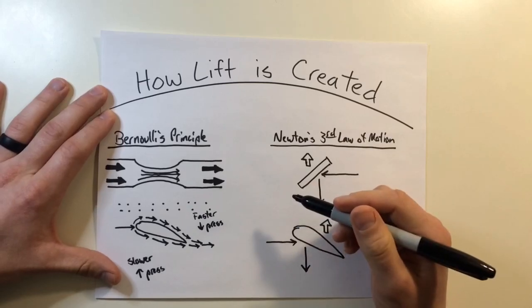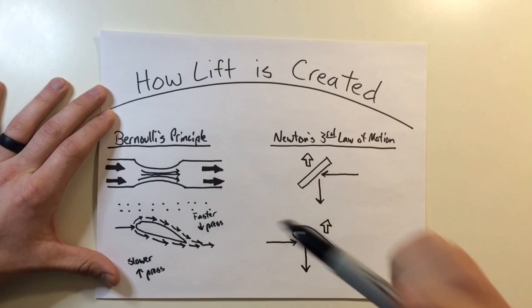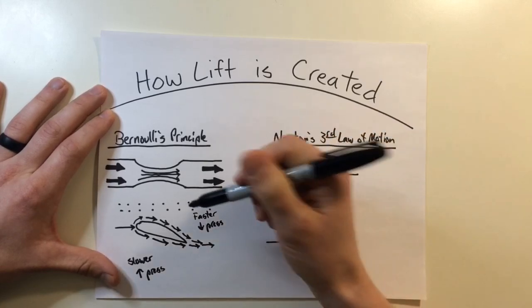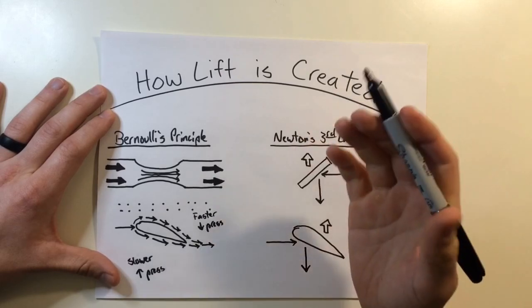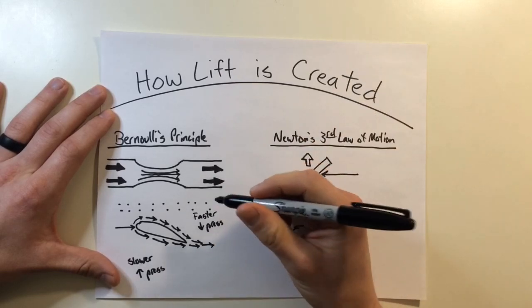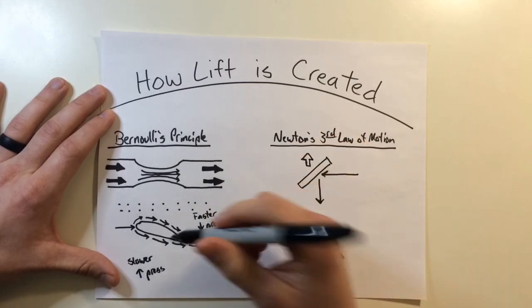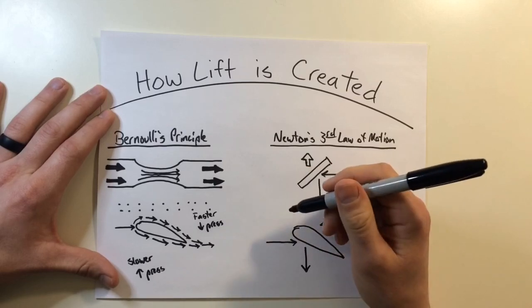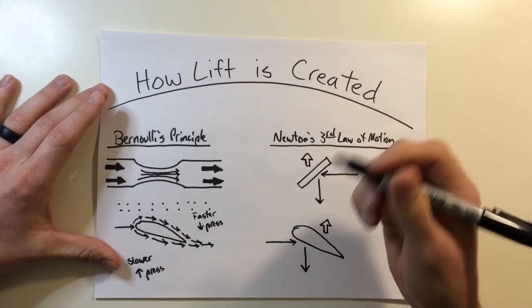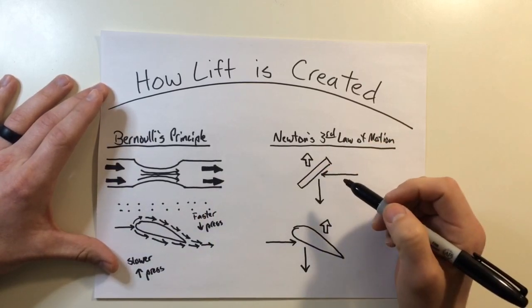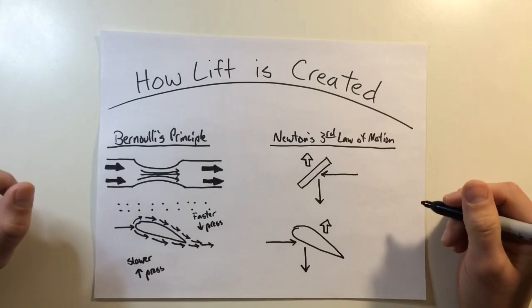Also, when we look at Bernoulli's principle, some advanced aerodynamicists have looked at it to say that this theory by itself can't explain why asymmetric airfoils can produce lift when completely inverted in the case of a fixed-wing aircraft. So neither one of these theories are completely self-sufficient for explaining lift, but it's commonly accepted that both of these are acting together in order to explain where lift comes from and how it's created.